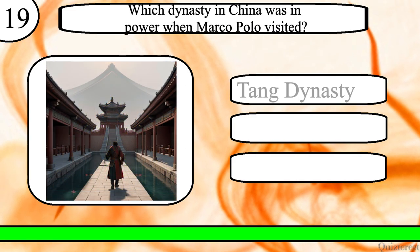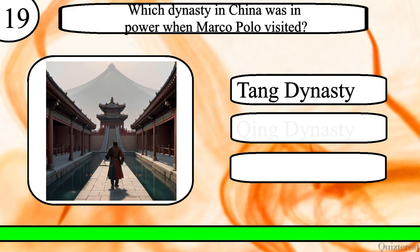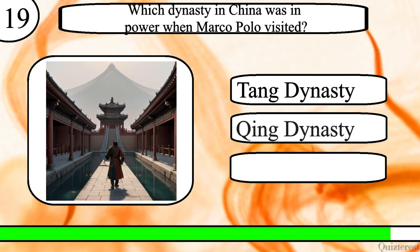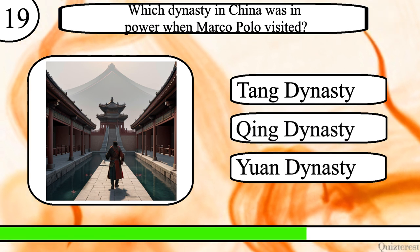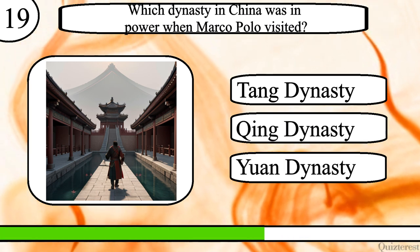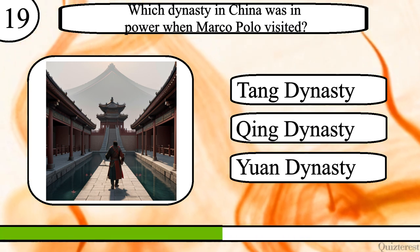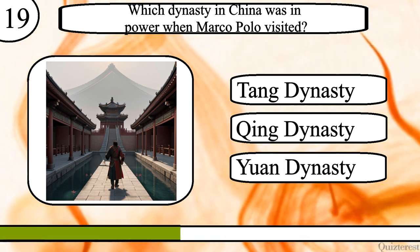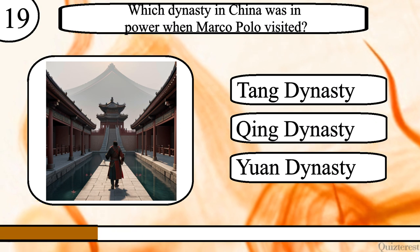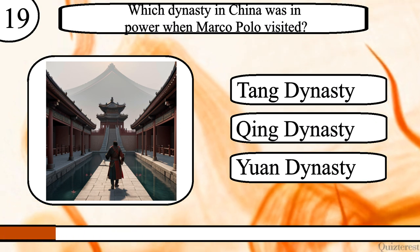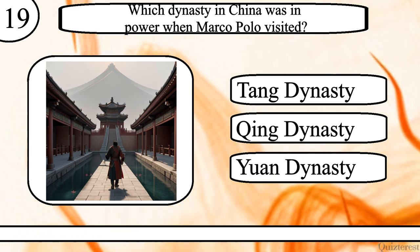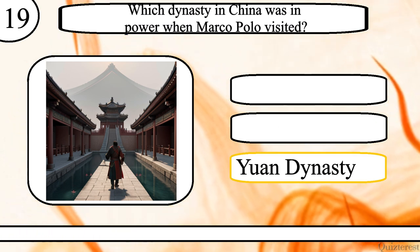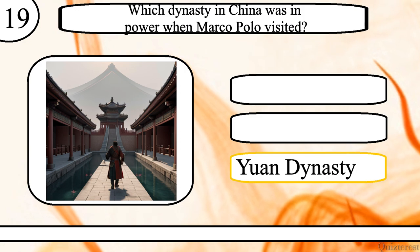Question 19. Which dynasty in China was in power when Marco Polo visited? Tang dynasty, Qing dynasty or Yuan dynasty? The correct answer is Yuan dynasty.